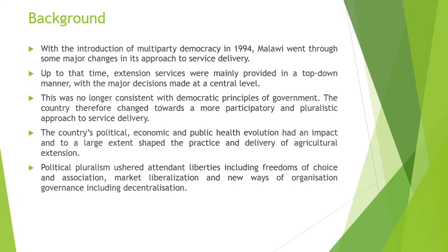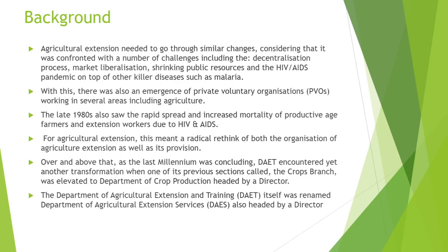Agricultural extension needed to go through similar changes, considering that it was confronted with a number of challenges such as the decentralization process, market liberalization, shrinking of public sector resources, and the HIV and AIDS pandemic, on top of other killer diseases such as malaria. With this, there was also an emergence of private voluntary organizations working in several areas, including agriculture. The late 1980s also saw the rapid spread and increased mortality of productive age farmers and extension workers due to HIV and AIDS.